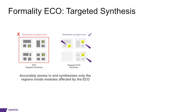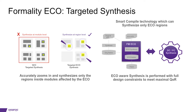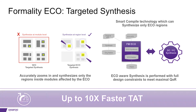Formality ECO is doing this with its newest Targeted Synthesis technology, and it is going to deliver fast compile without compromising on the quality of the patch. We do Targeted Synthesis by leveraging the strengths of both Formality and Synthesis. We take advantage of Formality's equivalency checking engines to find the ECO regions in the RTL. These ECO regions are then sent to DCNXT or Fusion Compiler, which are our state-of-the-art synthesis technology. Both tools have been enhanced to be ECO aware. Only the ECO regions are compiled, but the compile is done in the context of the full design constraints. This is the unique feature of Targeted Synthesis. Customers can expect a fast turnaround time for compiling the ECO regions without any impact on the quality of the patch.